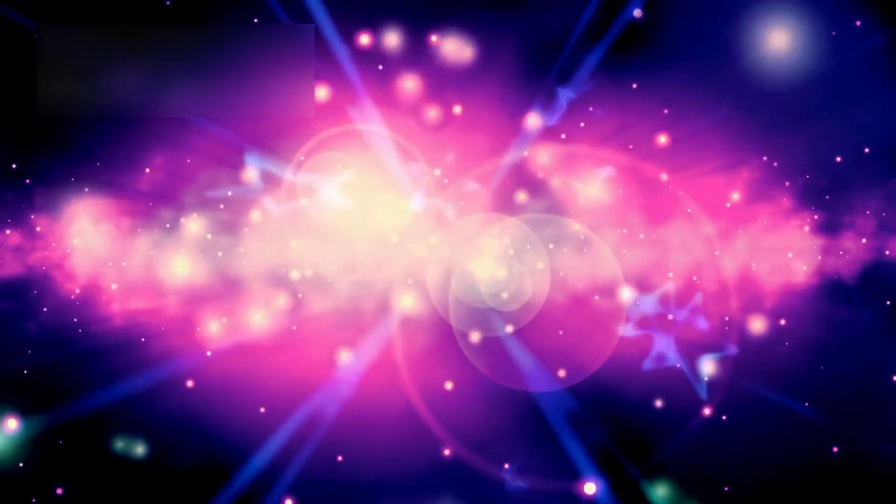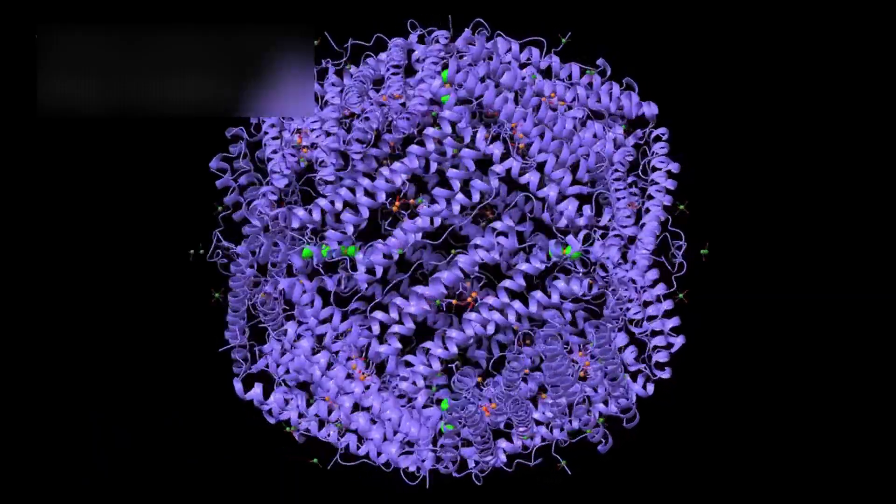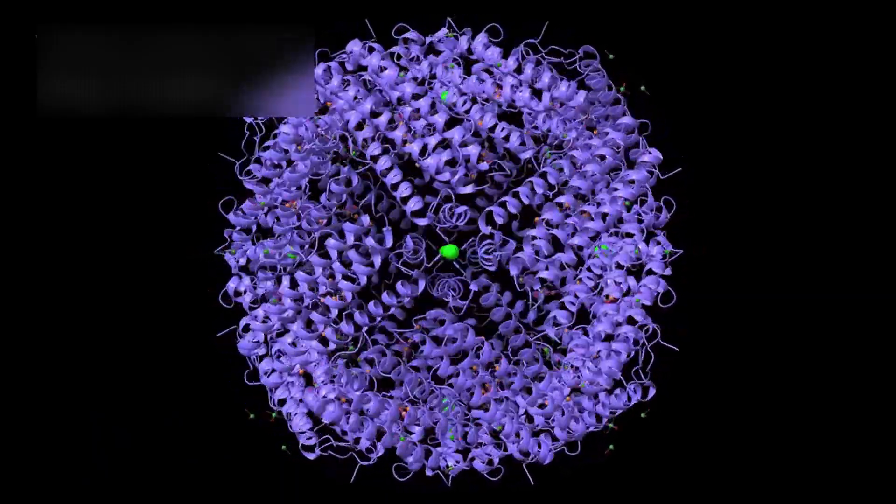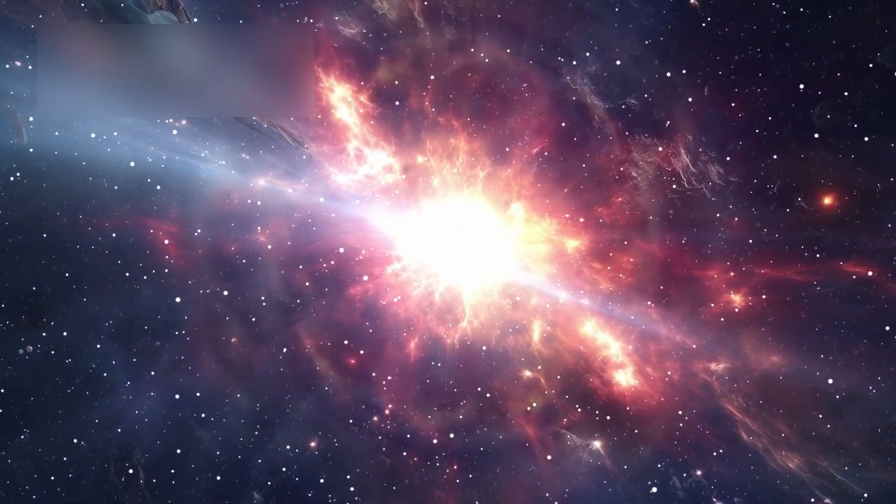Every atom in our bodies was forged inside stars. The carbon in our cells, the iron in our blood, the calcium in our bones, all born in stellar hearts that died long before Earth existed.